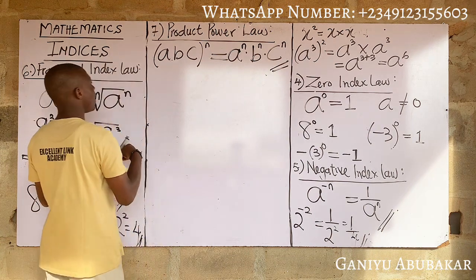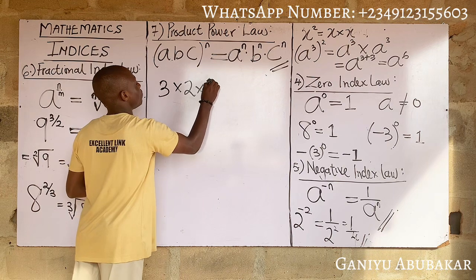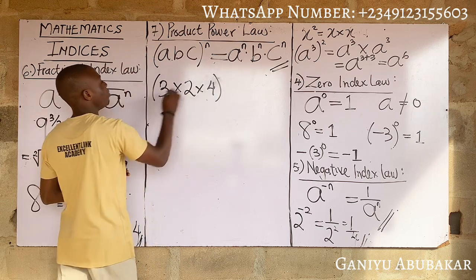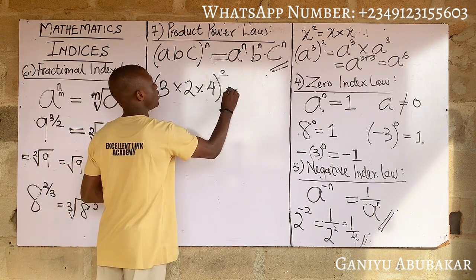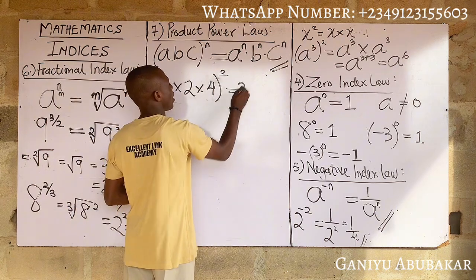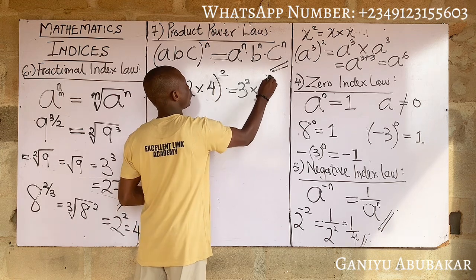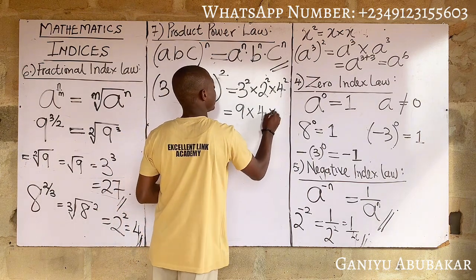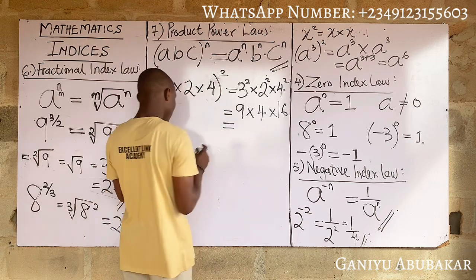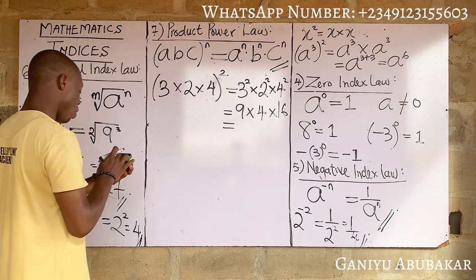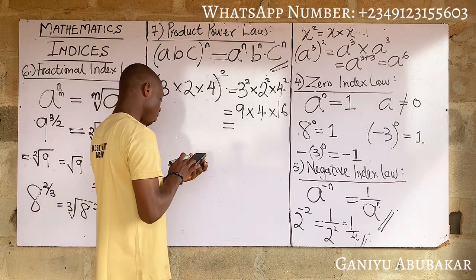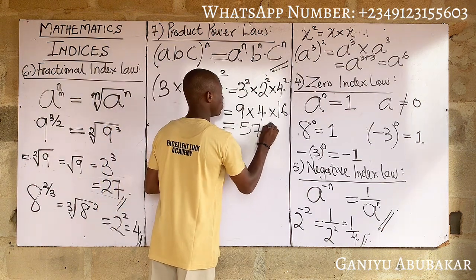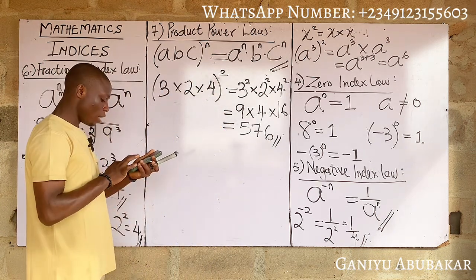For example, (3 × 2 × 4)² — pick out each term to that power: 3² × 2² × 4² = 9 × 4 × 16. Multiplying: 9 × 4 × 16 = 576. So the answer is 576, using the seventh law of indices.